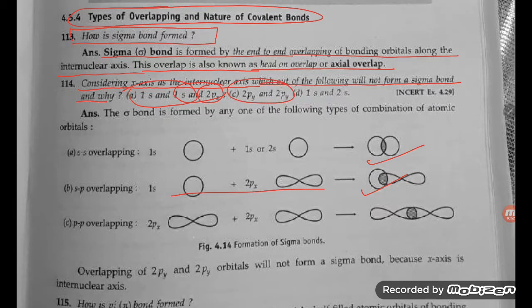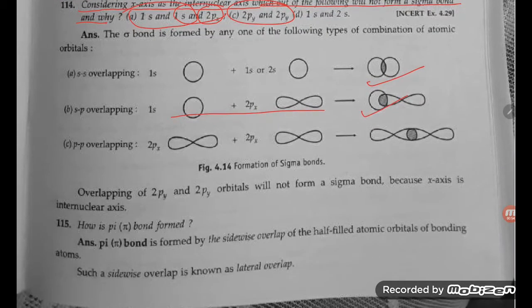2py and 2py orbitals will not form a sigma bond because the x-axis is the internuclear axis.